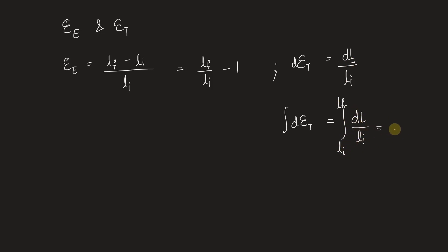So dL by Li. Here we get the integration as ln of L, and after putting the limits from Li to Lf, we have total true strain is equal to ln of final length minus ln of initial length. ln is nothing but natural log. So this can be written as natural log of final length upon initial length. So this gives us the true strain.